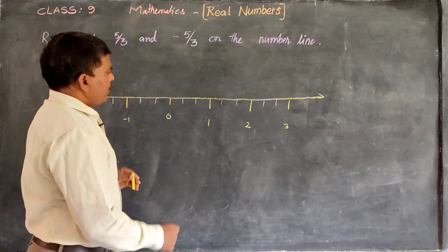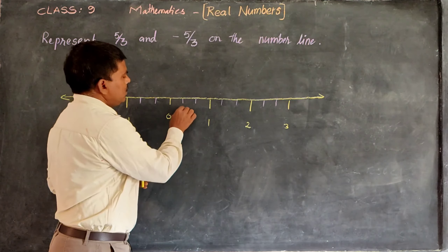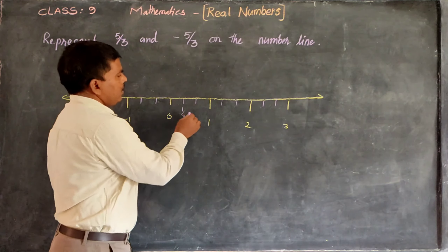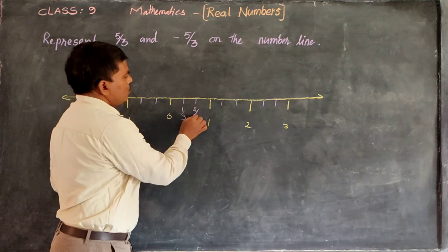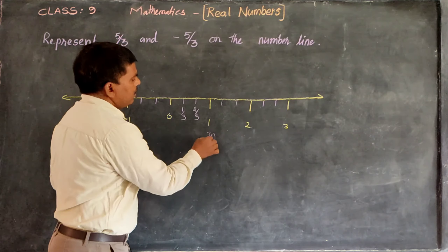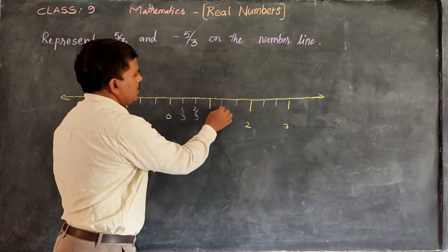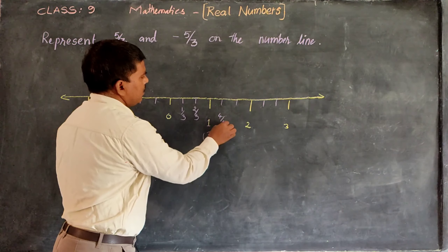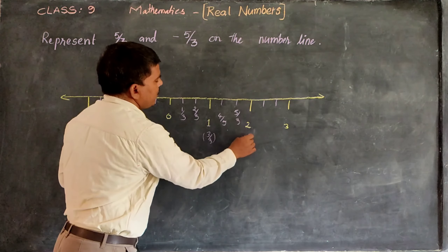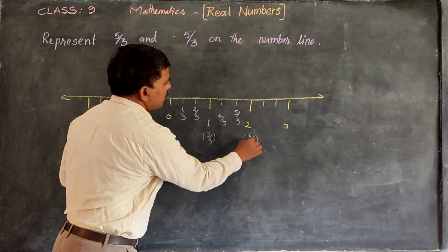From here: this is 1/3, this is 2/3, and this is 3/3. 3/3 is nothing but 1. And this is 4/3, and this is 5/3, and this is 6/3. 6/3 is nothing but 2.